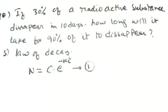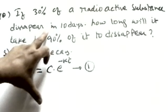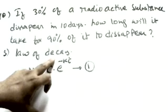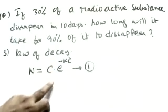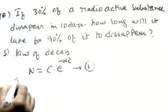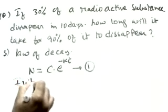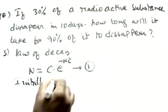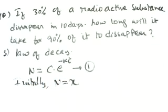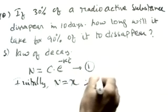Another question: If 30% of a radioactive substance disappears in 10 days, how long will it take for 90% to disappear? Since radioactive substance decreases, this is a law of decay. Using n = C·e^(−kt). Initially, let the amount be x, so at t = 0, n = x. Substituting: x = C·e^0 = C, so C = x.